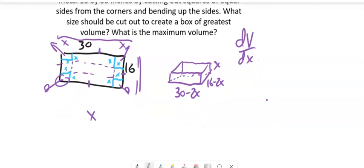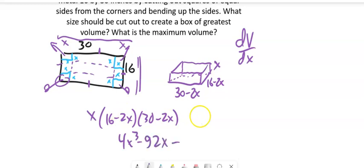So the volume of this box would be x times 16 minus 2x times 30 minus 2x. We can multiply this all out and we end up with 4x cubed minus 92x squared plus 480x. That's the volume.